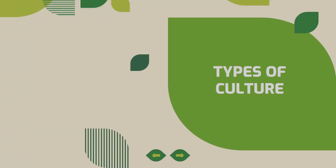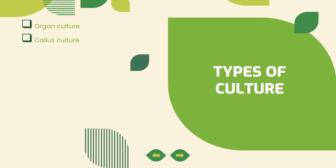Types of culture in plant tissue culture include: Organ Culture, Callus Culture, Cell Culture, Protoplast Culture, Embryo Culture, Pollen Culture, Seed Culture, and Meristem Culture. If you'd like to know more about these cultures individually, I will show you another video.